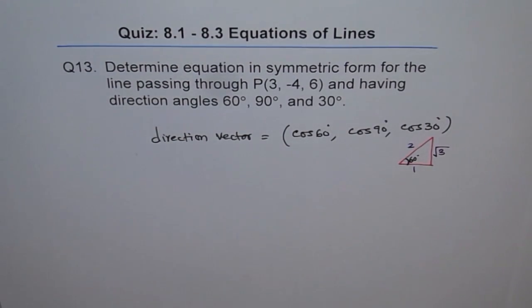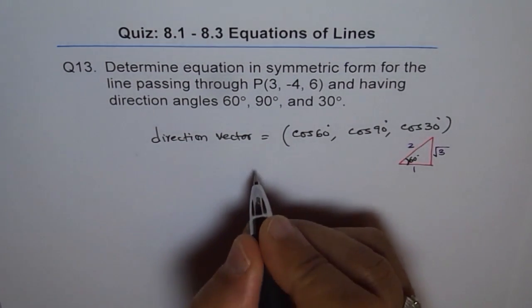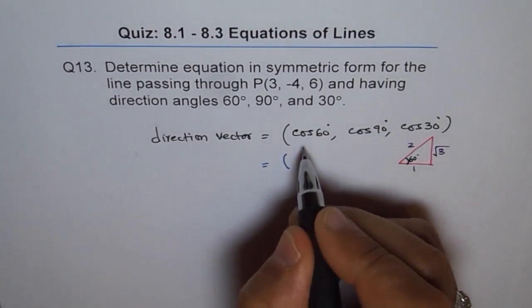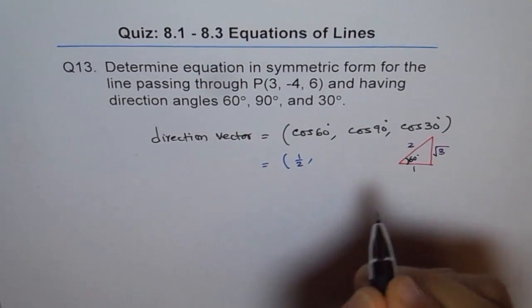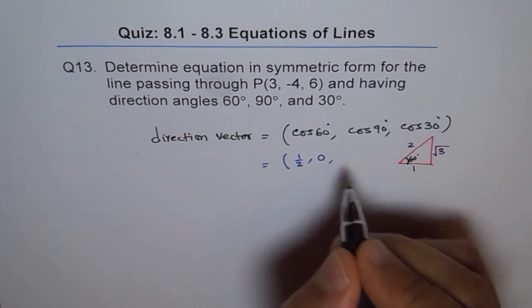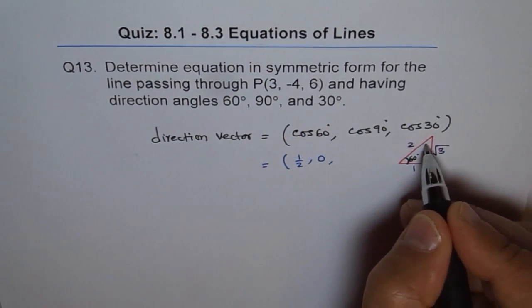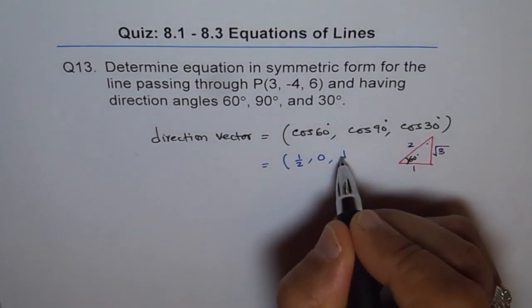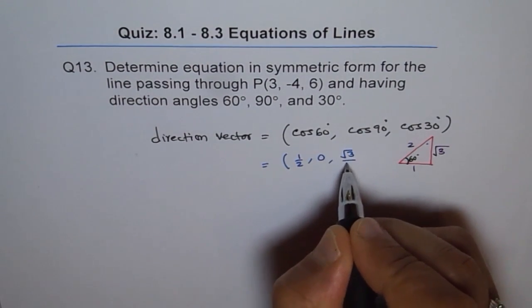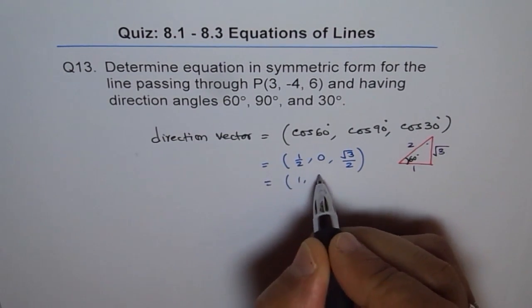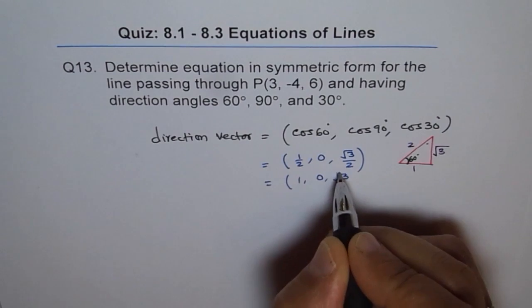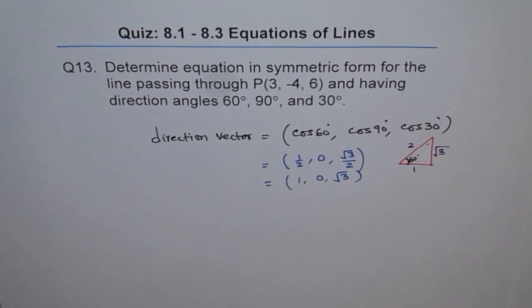So we get cos of 60 is 1 over 2, cos of 90 is 0, and cos of 30 degrees, 30 is this angle, square root 3 over 2. So we can take half common and we can simplify this to 1, 0 and square root 3. That is our direction vector.